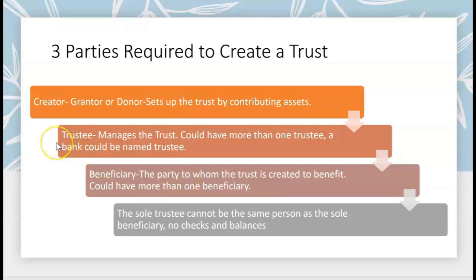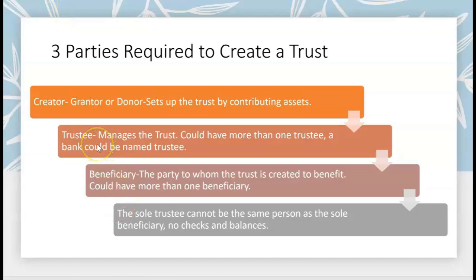You can have more than one trustee managing the trust and more than one beneficiary. This provides a system of checks and balances — the trustee manages the trust for the benefit of someone else, the beneficiary. That trustee was not named by the beneficiary; the trustee was granted power by the creator or grantor of the trust. If the sole trustee became the sole beneficiary, then the trust would terminate because there would be no checks and balances.